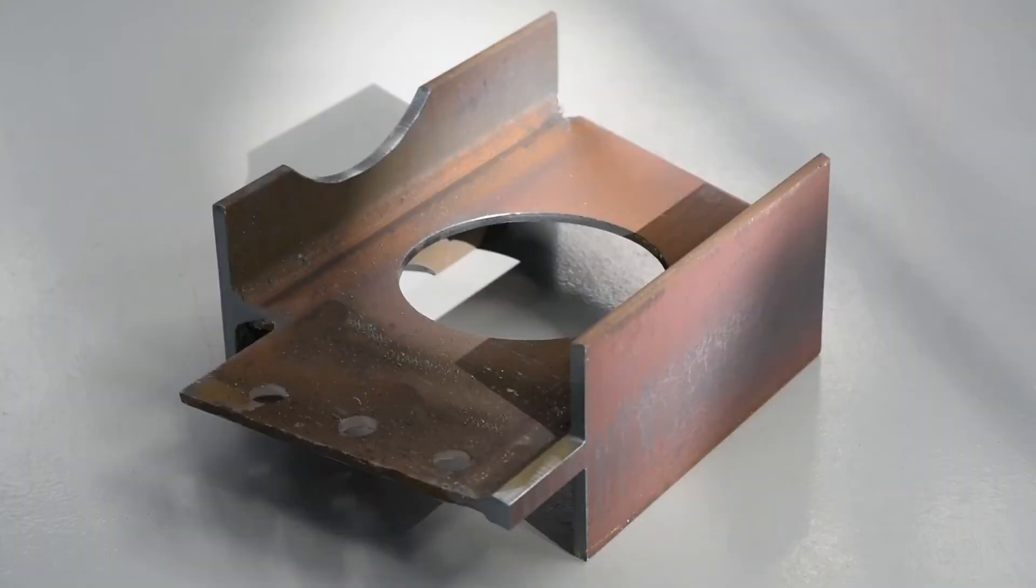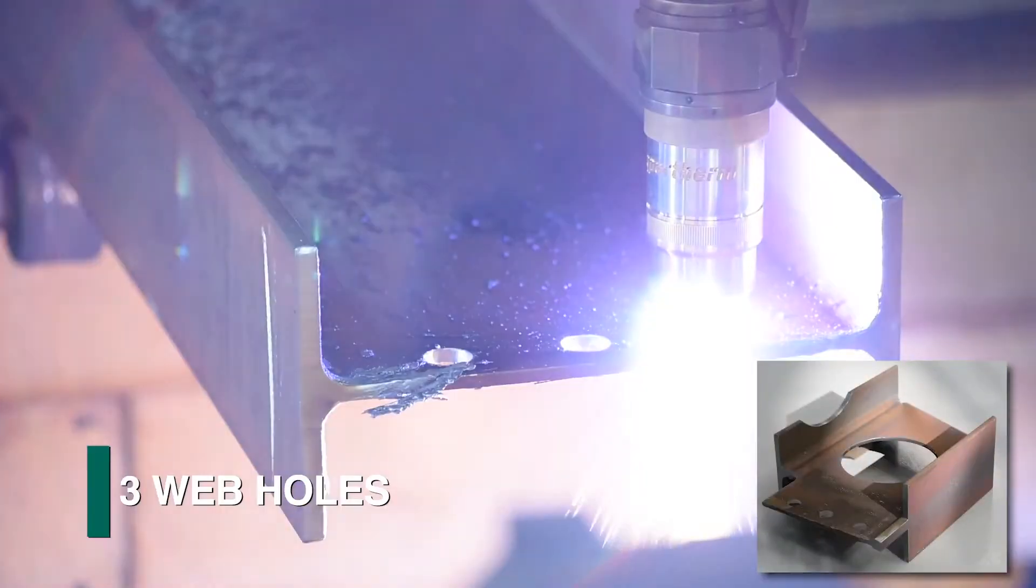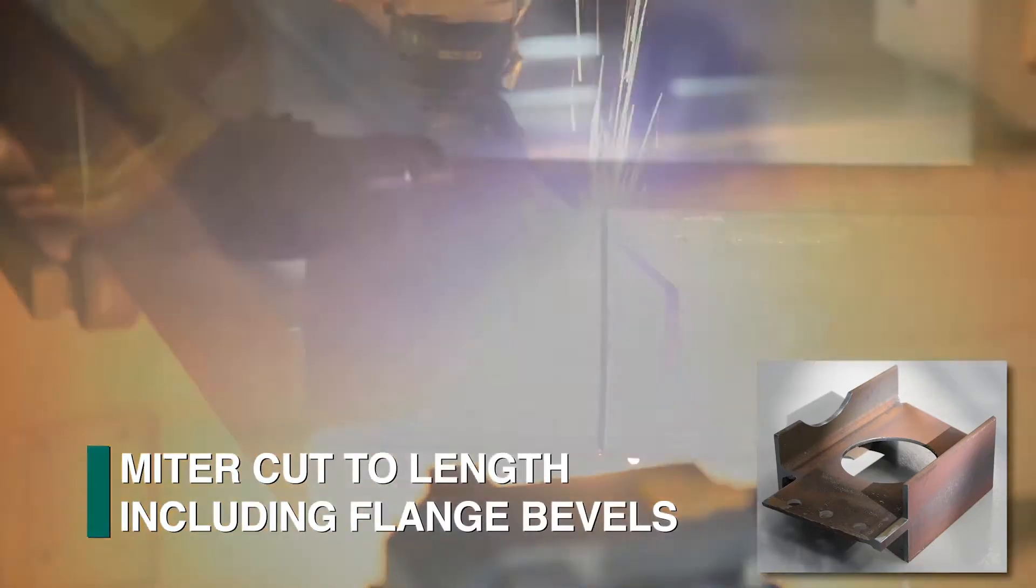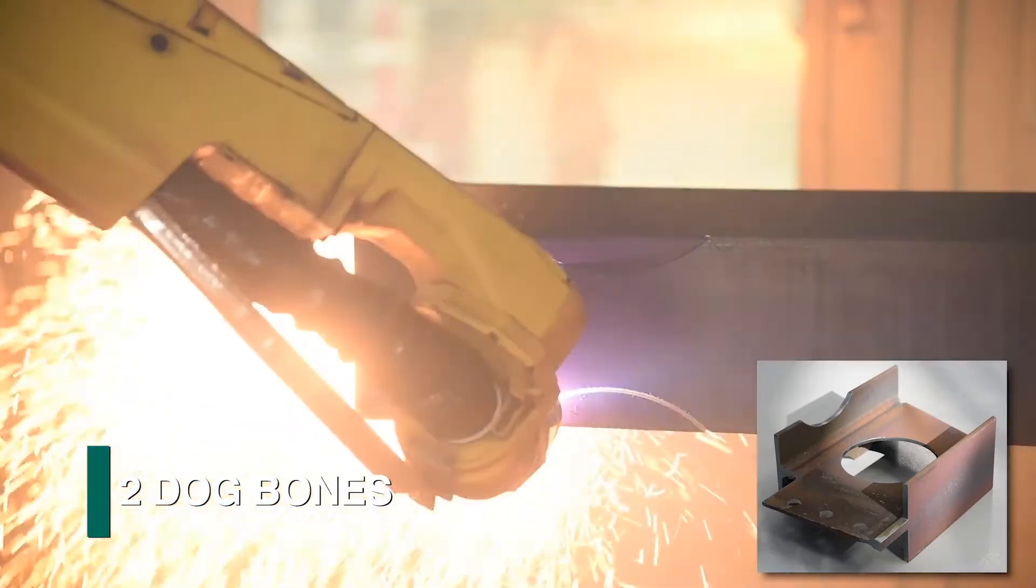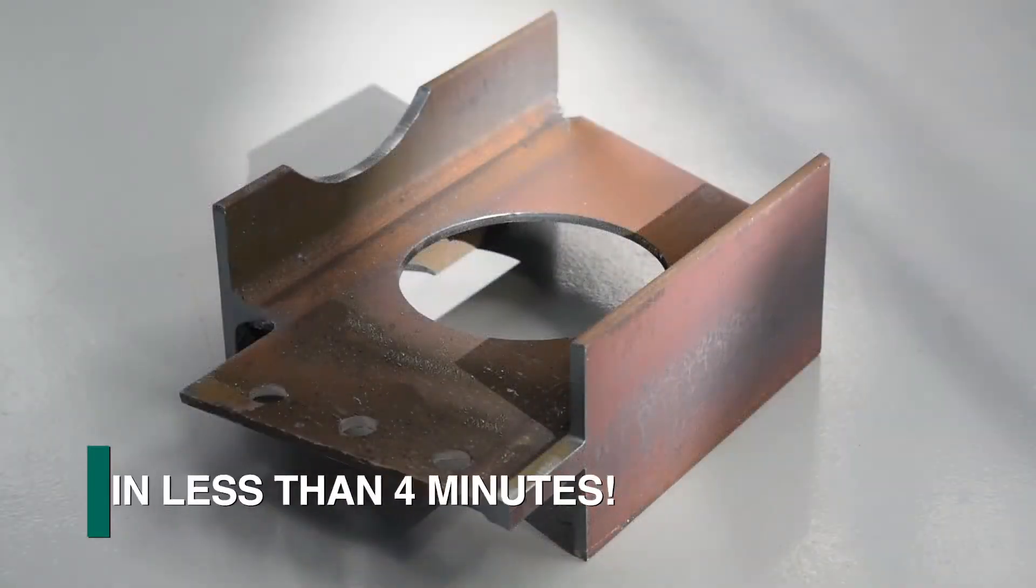Consider the following operations on this sample part: one block cope, flange copes top and bottom, three web holes, two rat holes, miter cut to length including flange bevels, web penetration, two dog bones, and part marking. All in less than four minutes.